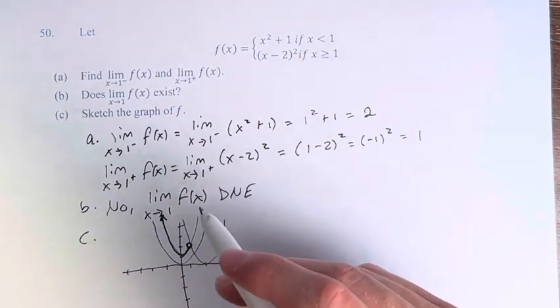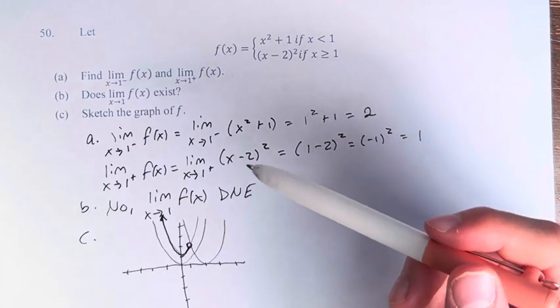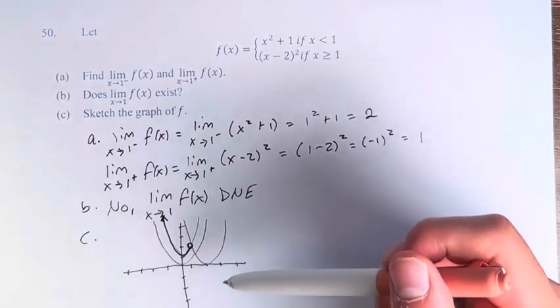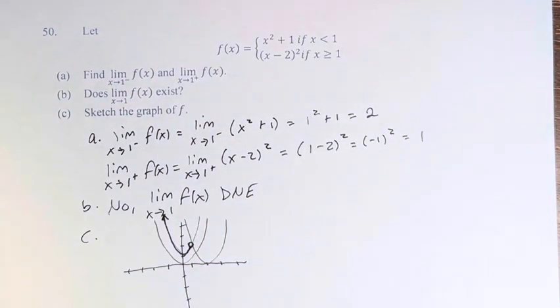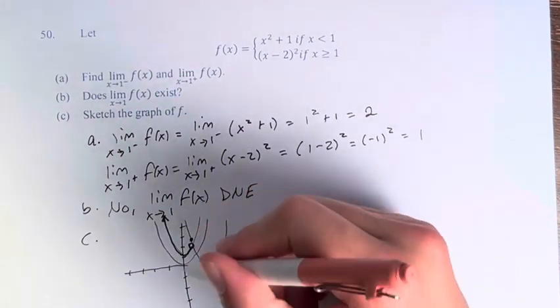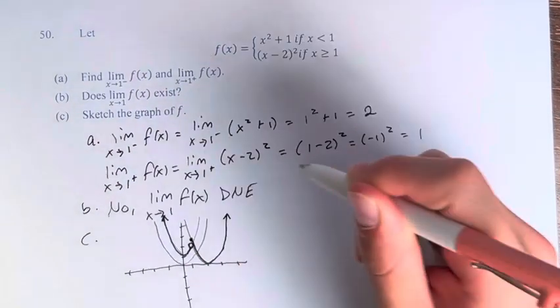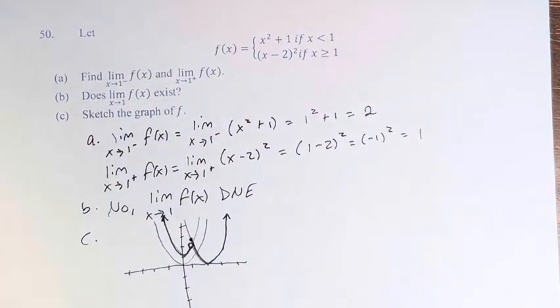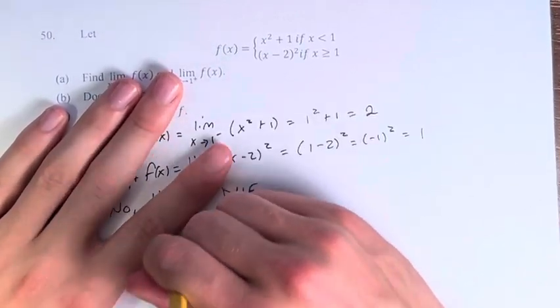And then for x is greater than 1 for this function right here, that is this point right here. And it's like that. I didn't do a great graph of it because it almost looks like it's intersecting, but that's the general idea of the graph. Wish I could have done a better job, but that's okay.